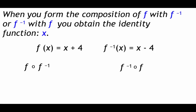The way we check if something is an inverse or not is by using function composition. One thing we can do is take f composed with the inverse of f — that's what this little negative first power means — or we can work the other direction, going with the inverse of f composed with our original function f. When we do that, if these things are in fact inverses, we should end up with just a plain x at the end. I'm going to run this function composition both ways down below just so you can see both of them working.